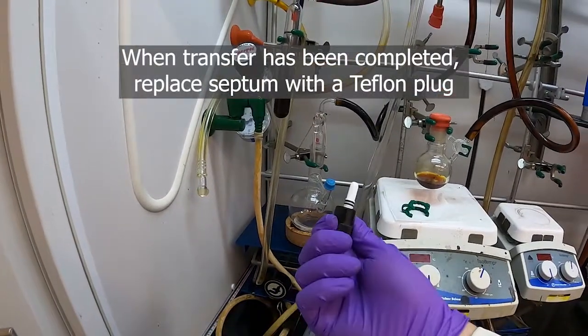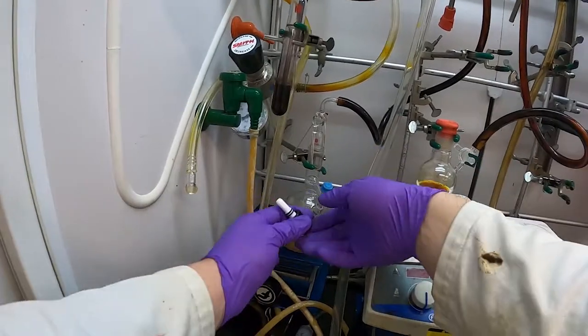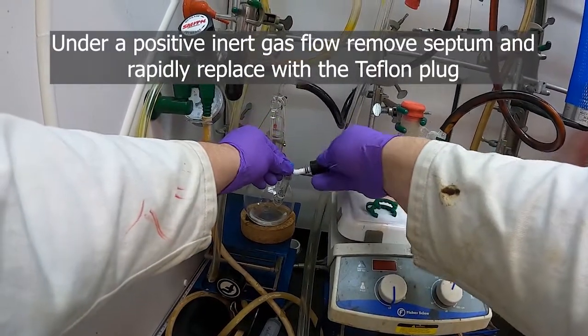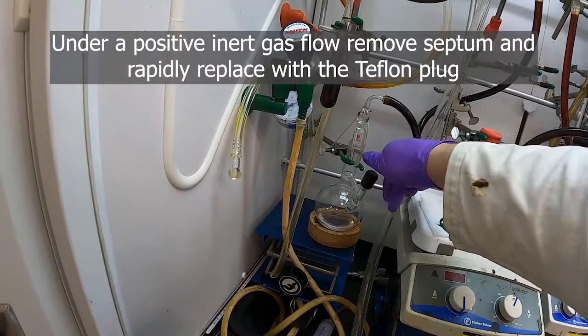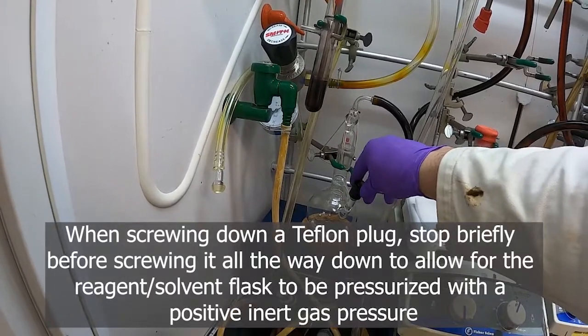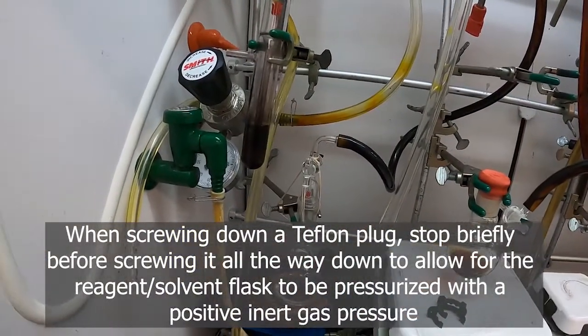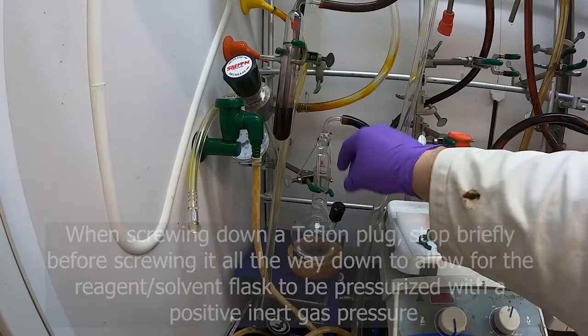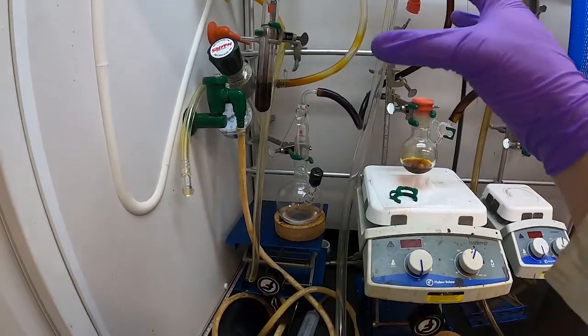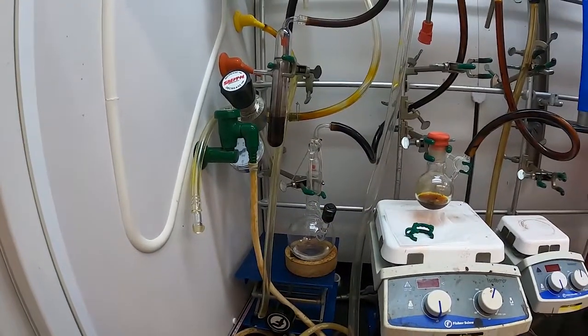Now that we're done with this solvent, we can put the Teflon stopper back in. We want to make sure that we have a good flow of nitrogen going into this flask. Take the stopper, peel the lip of the septum up, and then quickly replace them. Screw it down but don't screw it all the way down. Make sure that you're getting a good flow of nitrogen out of your bubbler on this side. That will mean this flask is under positive pressure of inert gas so that when it's sealed it won't draw air through any of the spaces. Then tighten your stopper and you're good to go.